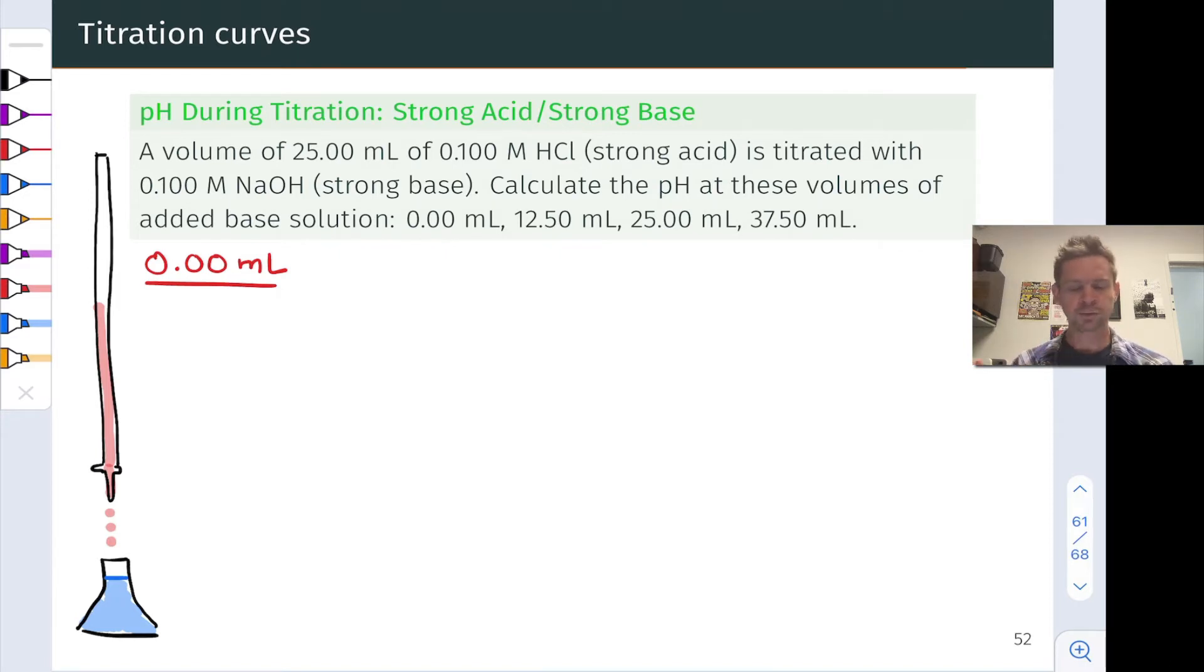Here we've got a volume of 25 milliliters of 0.1 molar HCl. That's our analyte in our typical titration drawing here. And our titrant is 0.1 molar NaOH, a strong base. The titration reaction as a full molecular equation: HCl plus NaOH goes to NaCl and H2O. Although conceptually, I think it's helpful to think about it as H3O+ reacting with OH- to make two H2Os with Na+ and Cl- as spectators.